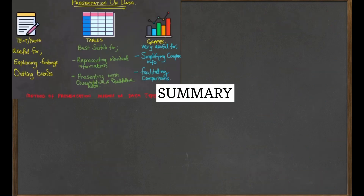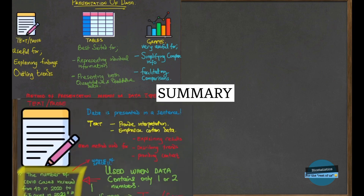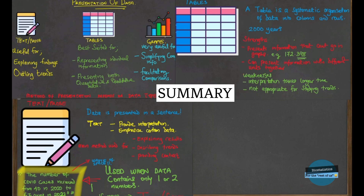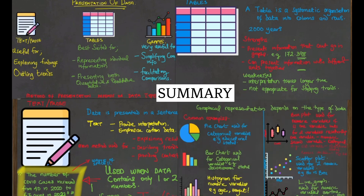In summary, we've talked about data presentation and said it can be in three forms: textual, tabular, and graphical. Textual data is presented in sentences; tabular presentation presents more accurate information and handles data that cannot go into graphs. For graphical presentation, the type depends on the kind of data you have, and different graph types are used for different data types — we provided several illustrations and examples.